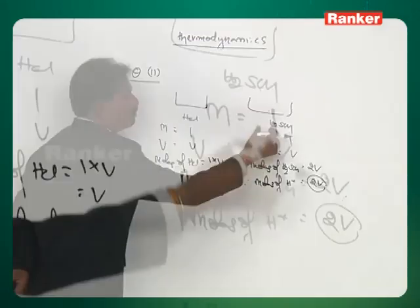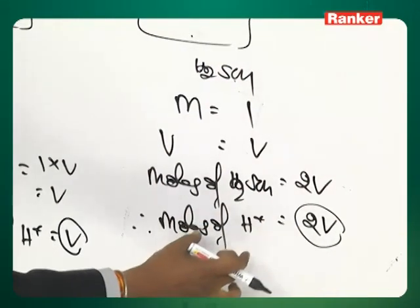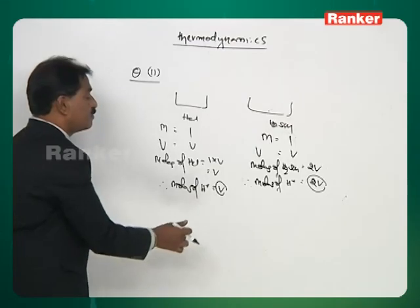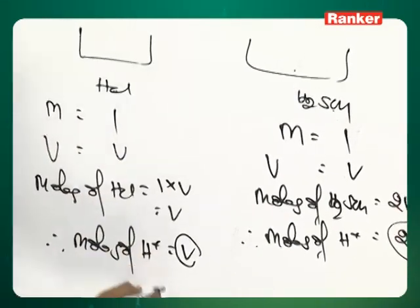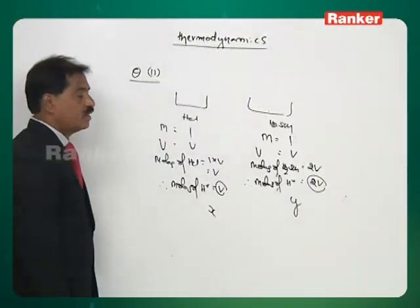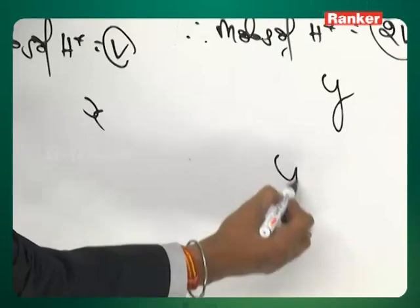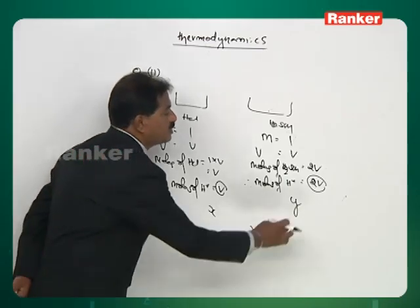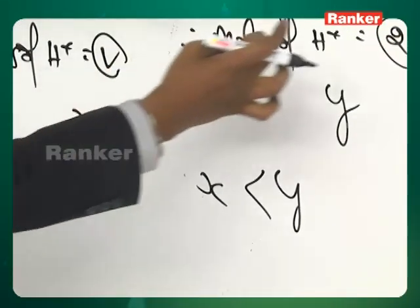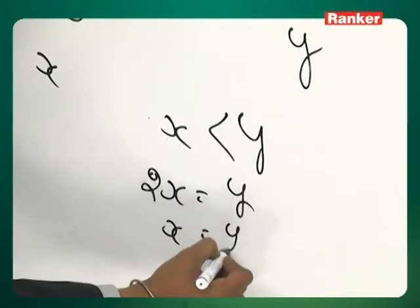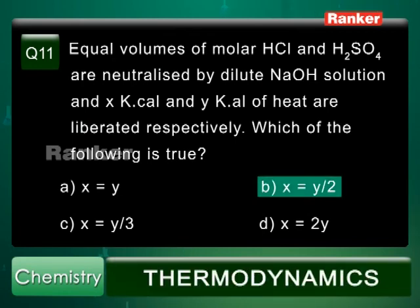Heat liberated from HCl is X and from H2SO4 is Y. Since H2SO4 produces twice as many H+ ions, Y is twice X. Therefore 2X = Y, giving X = Y/2. Answer is B.